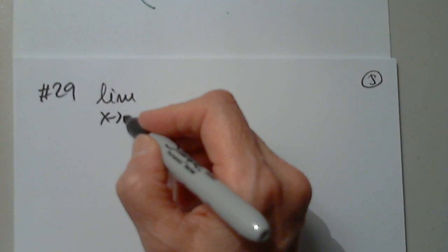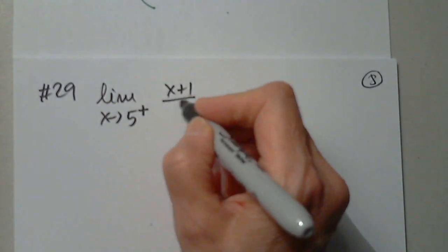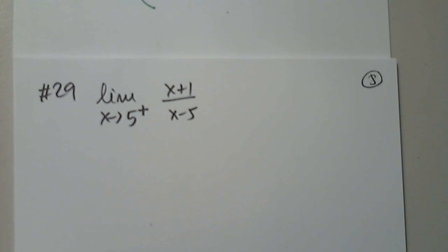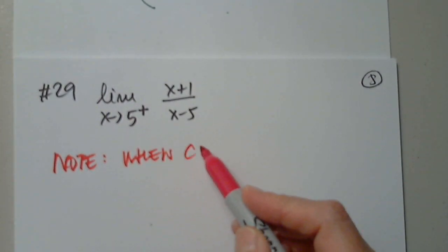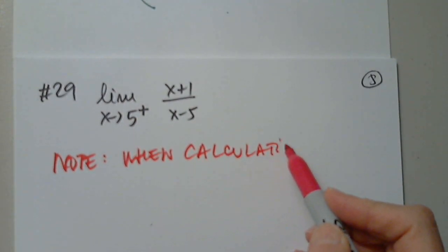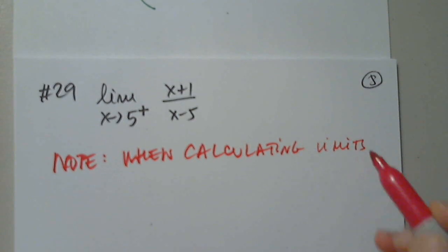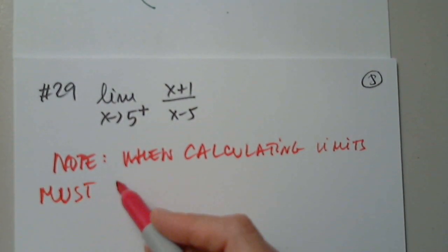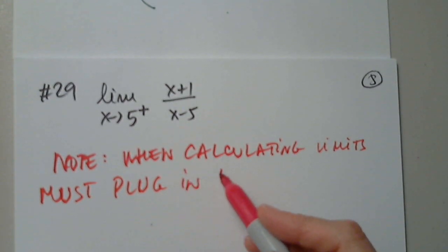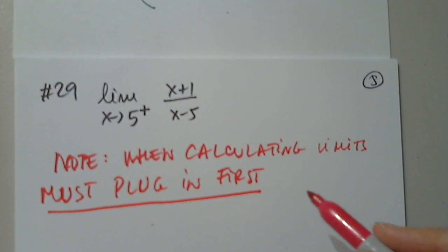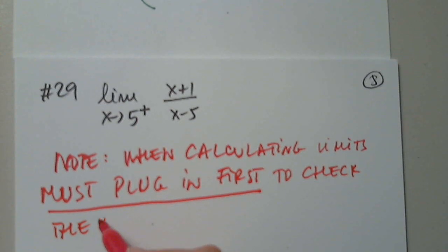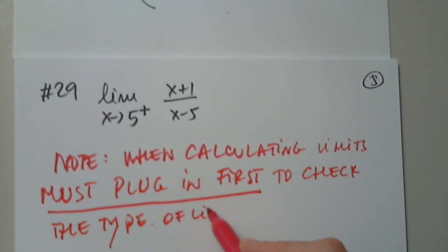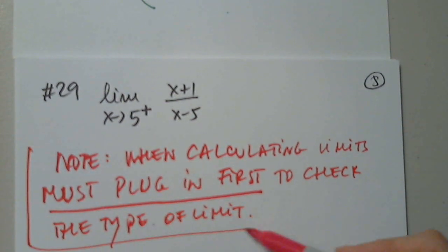We have limit as x approaches 5 from the right of x plus 1 over x minus 5. When calculating limits, you must plug in first — always. Plug it in to check the type of limit we are facing. This is a must.